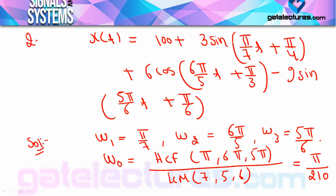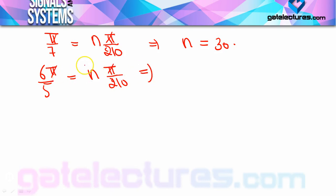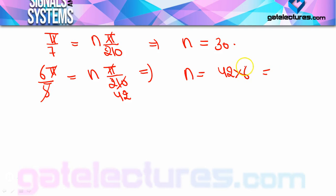For the second term, 6π/5 = n·(π/210). After cancelling π, n = (6/5)×210 = 6×42 = 252. So the 252nd harmonic is present.